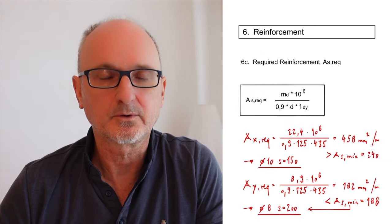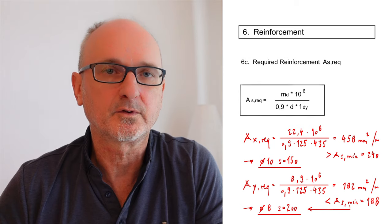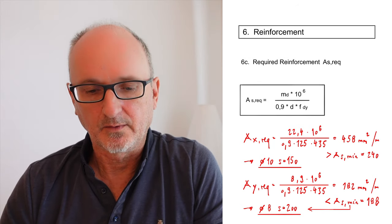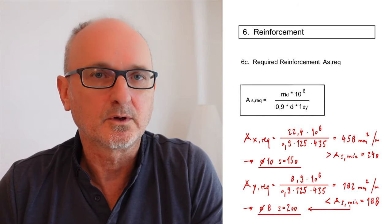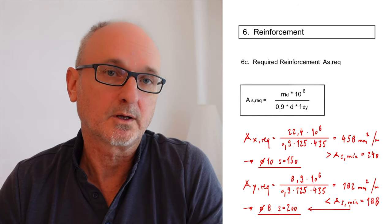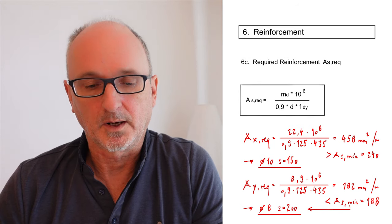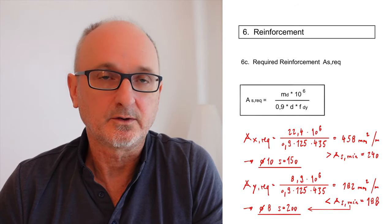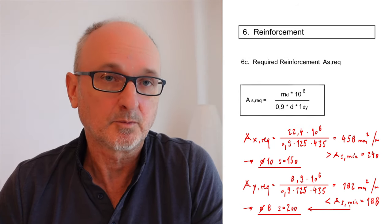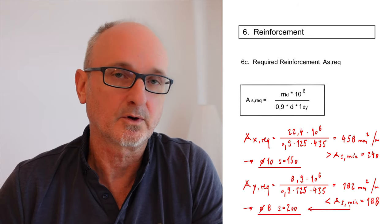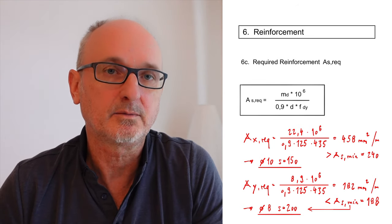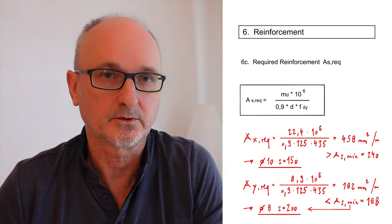For the Y direction (lower moment), the required reinforcement is 185 mm²/m. Comparing with the minimum reinforcement calculated before, it is lower — so we don't use 185 mm² but instead apply the minimum reinforcement: ø8 at 200 mm spacing. With that, we have finished the calculation of the reinforcement.